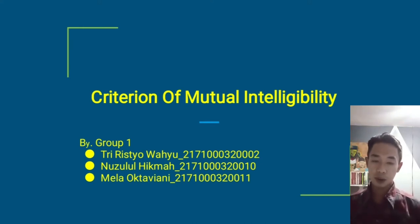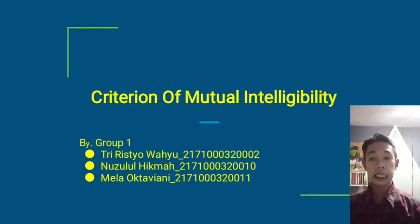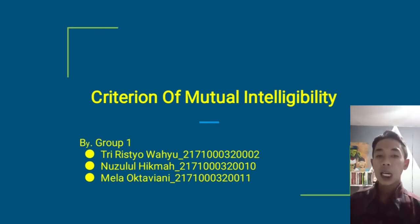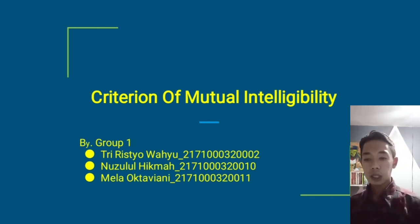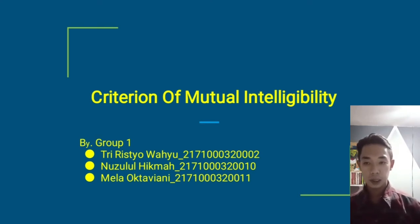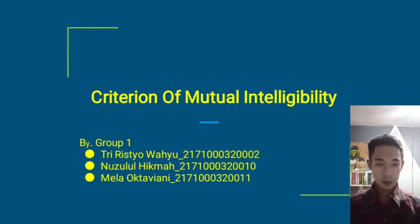Hello everyone, assalamualaikum warahmatullahi wabarakatuh. We are from group one and we are going to present about the criterion of mutual intelligibility. For this presentation we have three speakers: the first speaker, Mbak Nuzulul Hikmah, will explain the definition of criterion of mutual intelligibility and the isogloss with examples. The second speaker, Mela Oktaviani, will cover dialect boundary with examples. The third speaker will present about the dialect continuum.